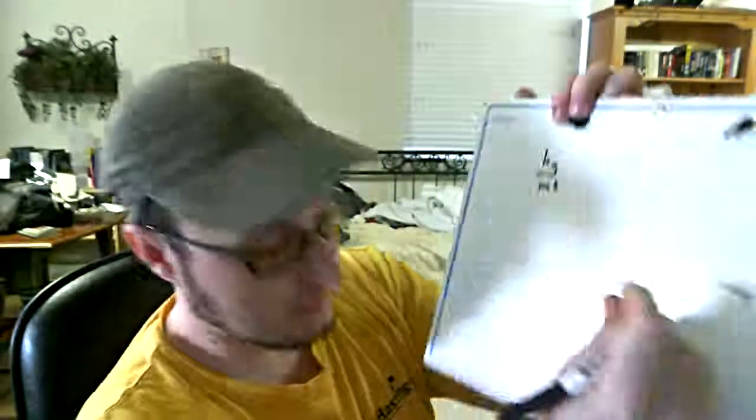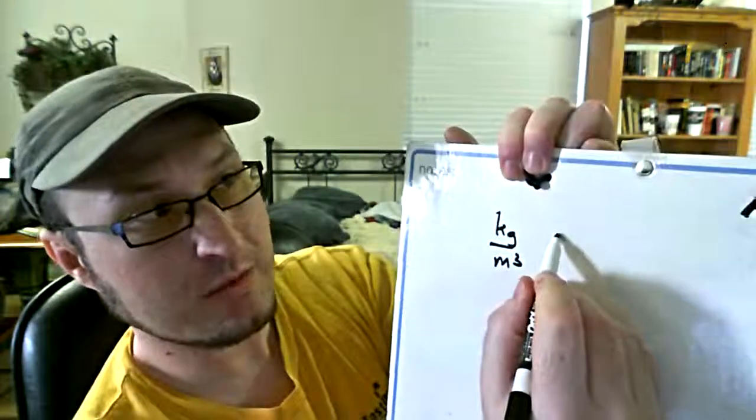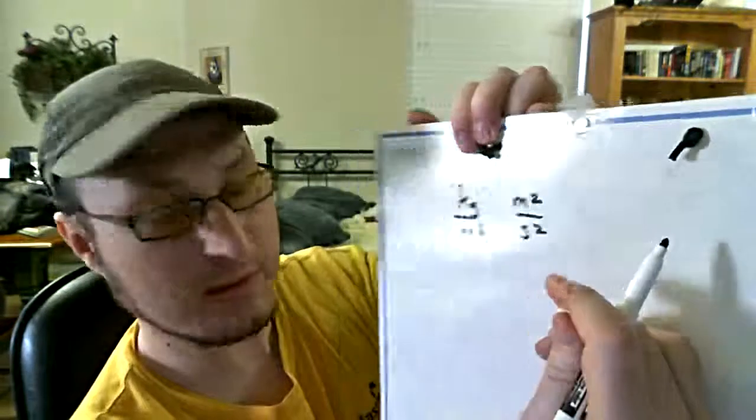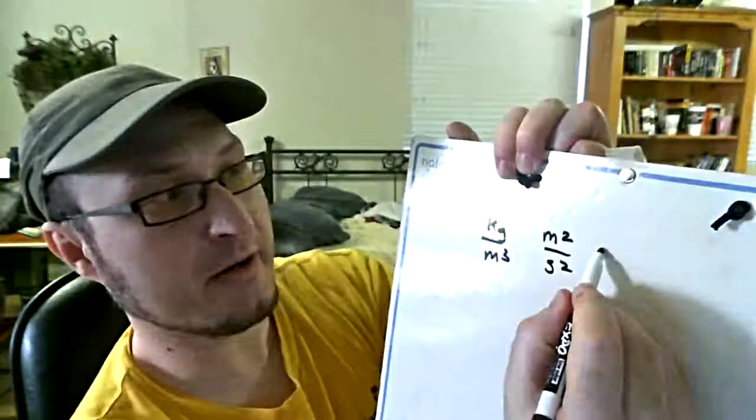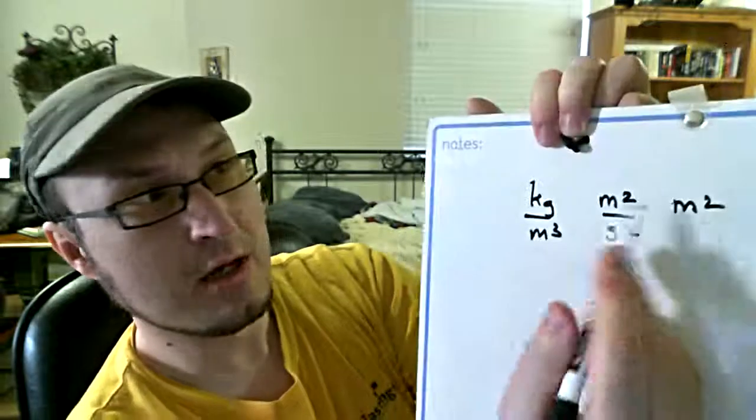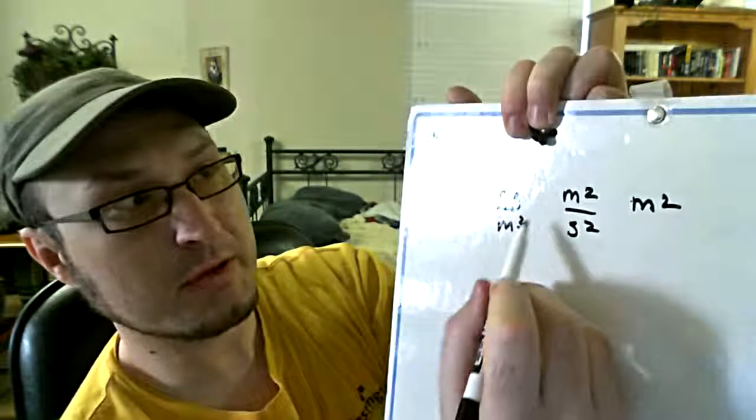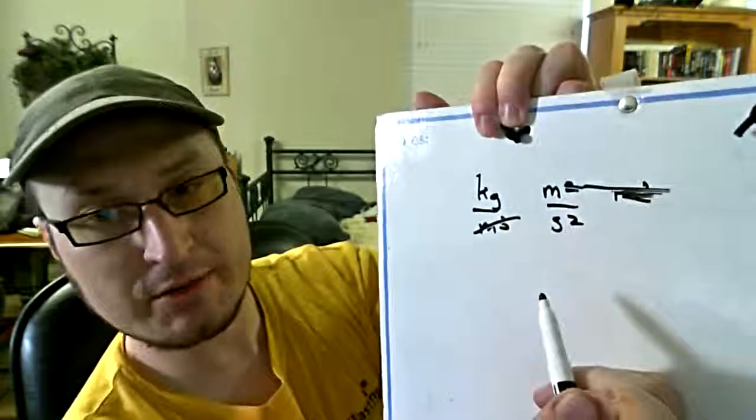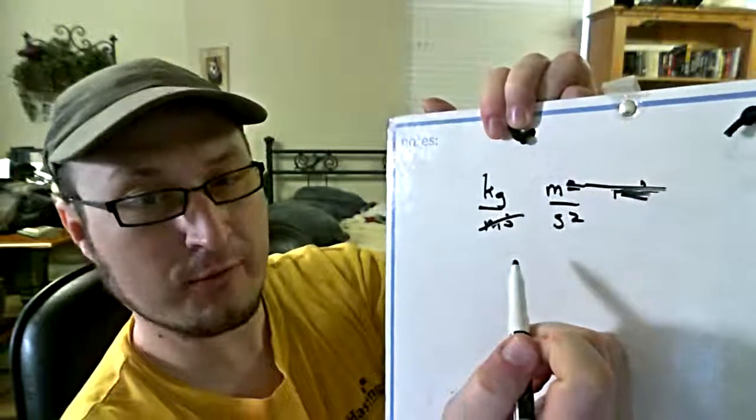Kilograms per cubic meter, multiplied by a velocity squared which is going to be meters squared per second squared because I square that velocity, multiplied by an area which is meters squared. So I've got four meters squared and three on the bottom: kilogram meters per second squared. That is what I'm looking for for a force.